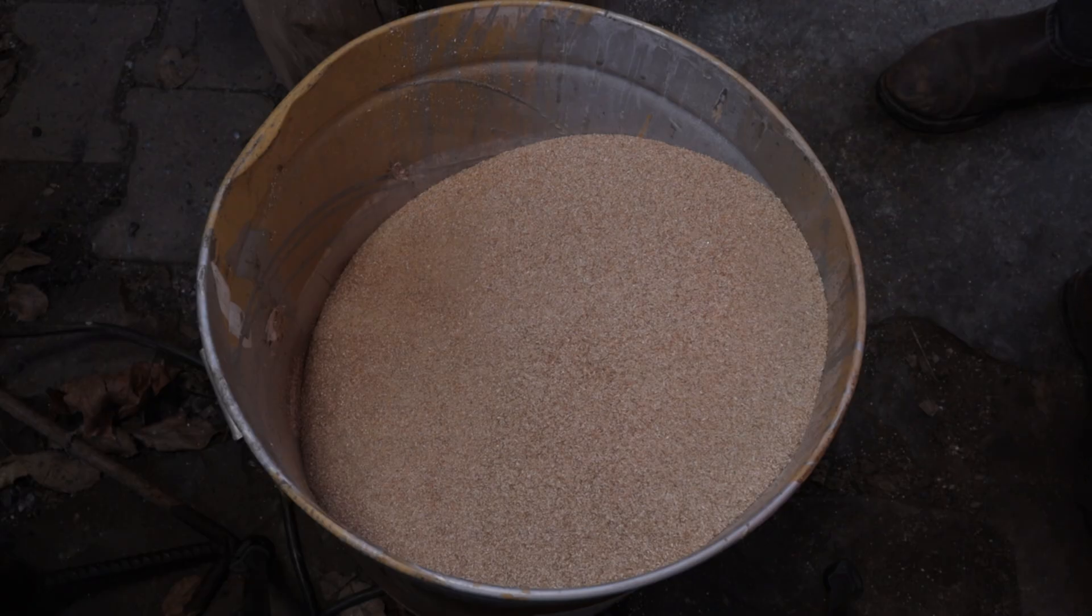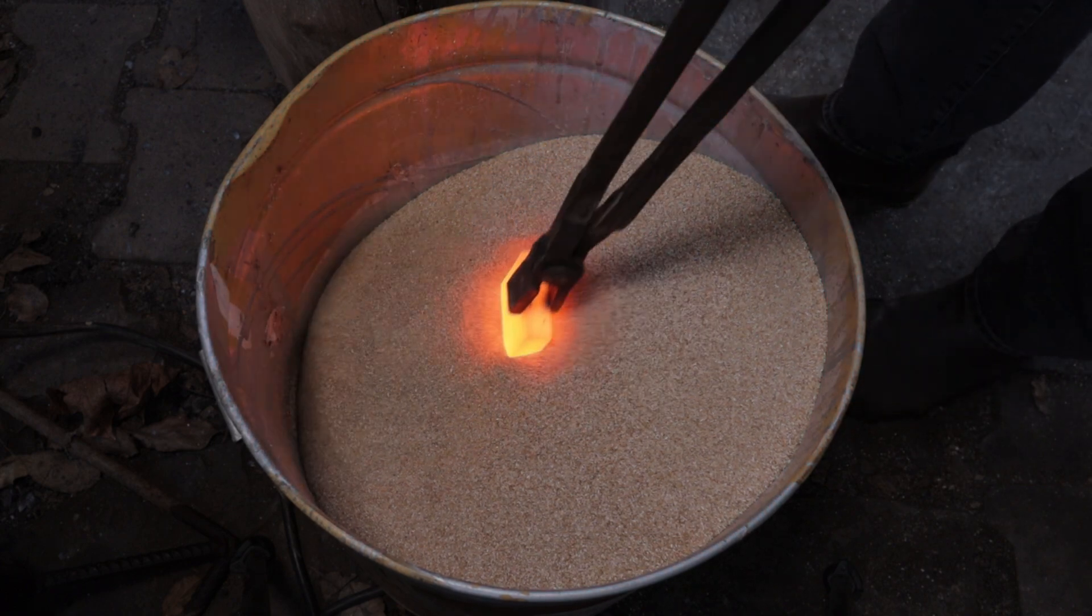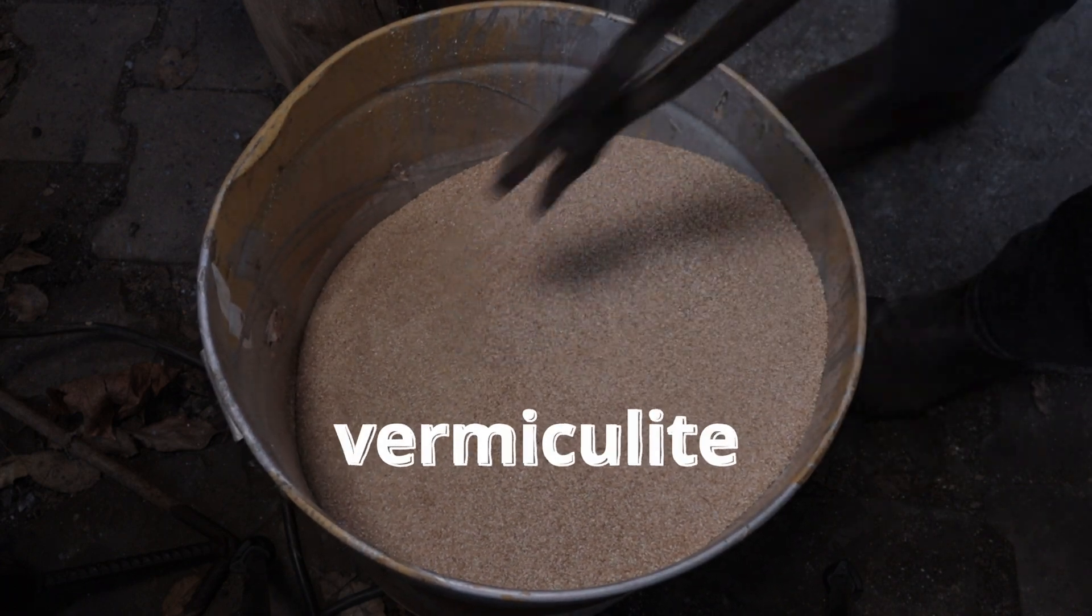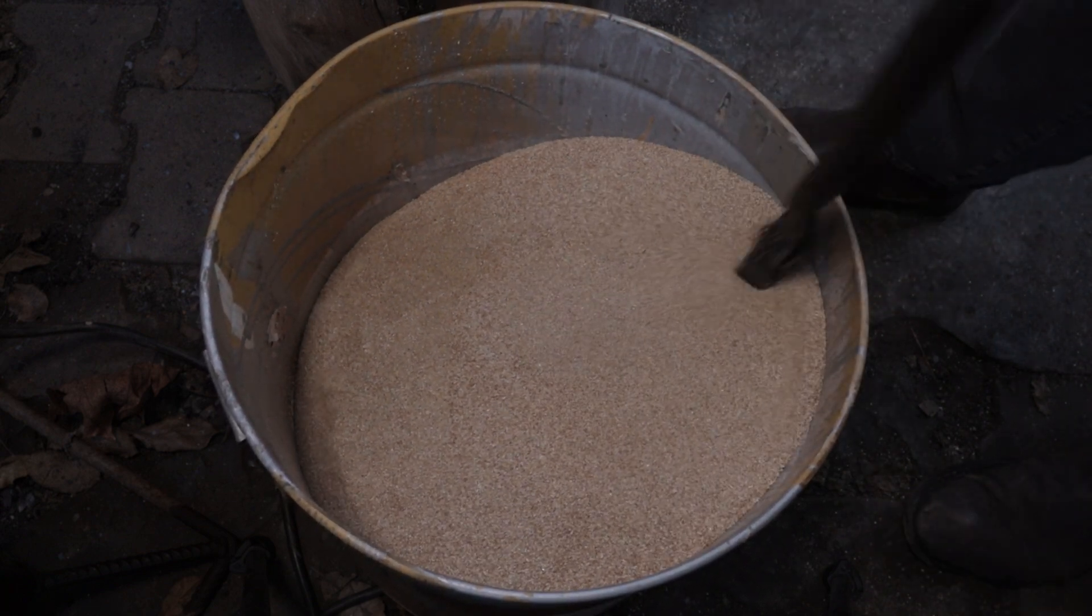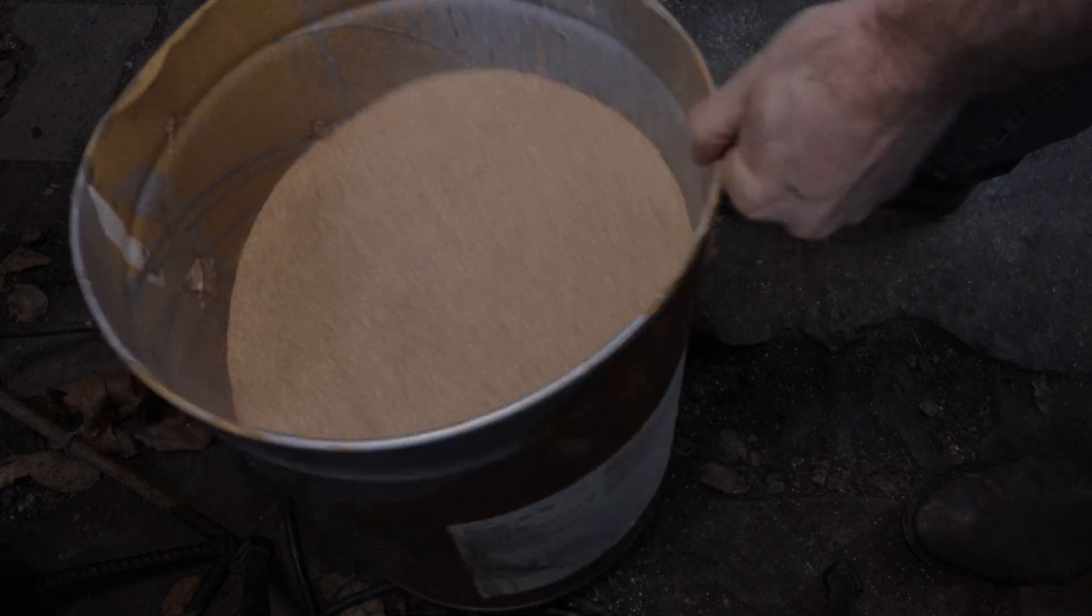I don't want to machine hard steel, so I heated it up and buried it in vermiculite. Vermiculite ensures slow cooling, resulting in softer steel.